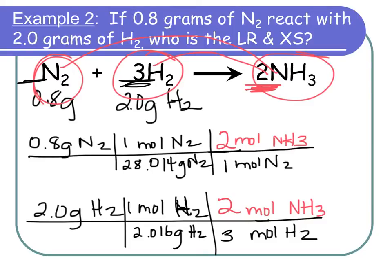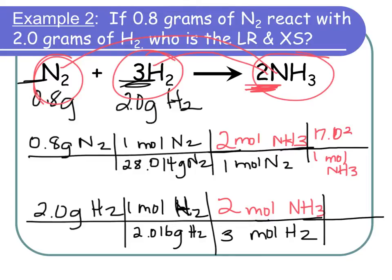They asked for grams, so we keep going. One mole of ammonia is 17.003 grams. We use that molar mass on both train tracks — a little validating that we get to reuse that number on the second track.